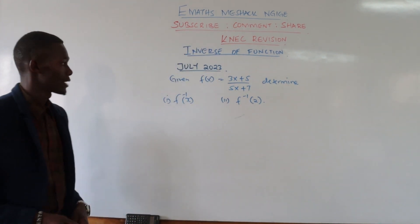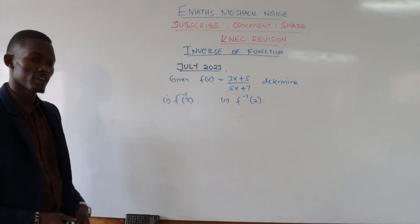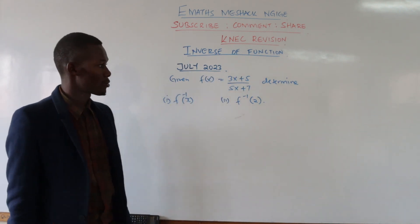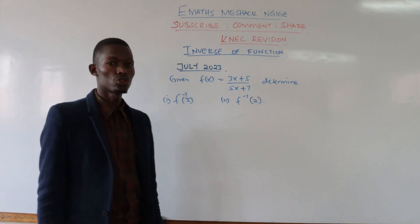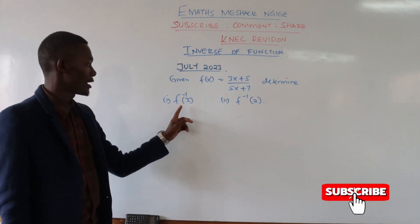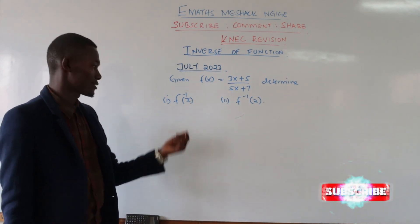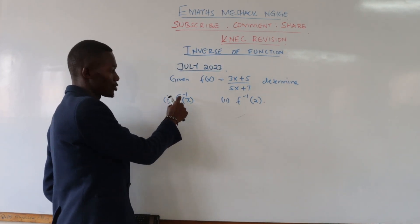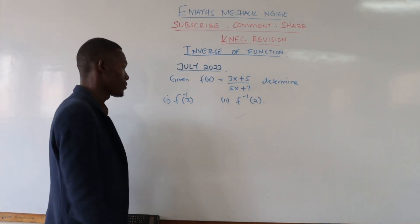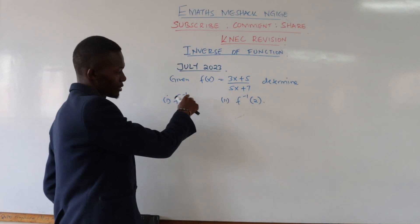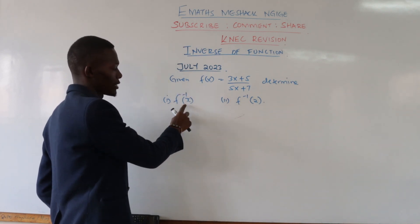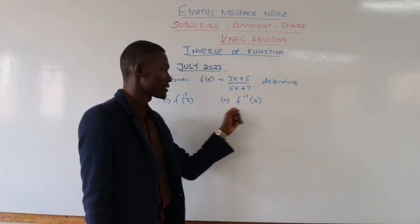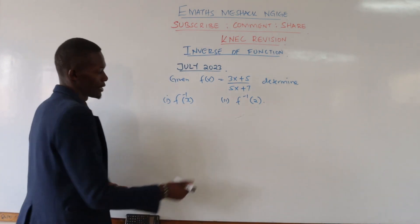We have the July series. We are given a function f(x) as a quotient function, and we are told to determine the inverse. Anytime you see a function with a bar and a negative 1 — written as f to the negative 1 — that illustrates the inverse of a function.